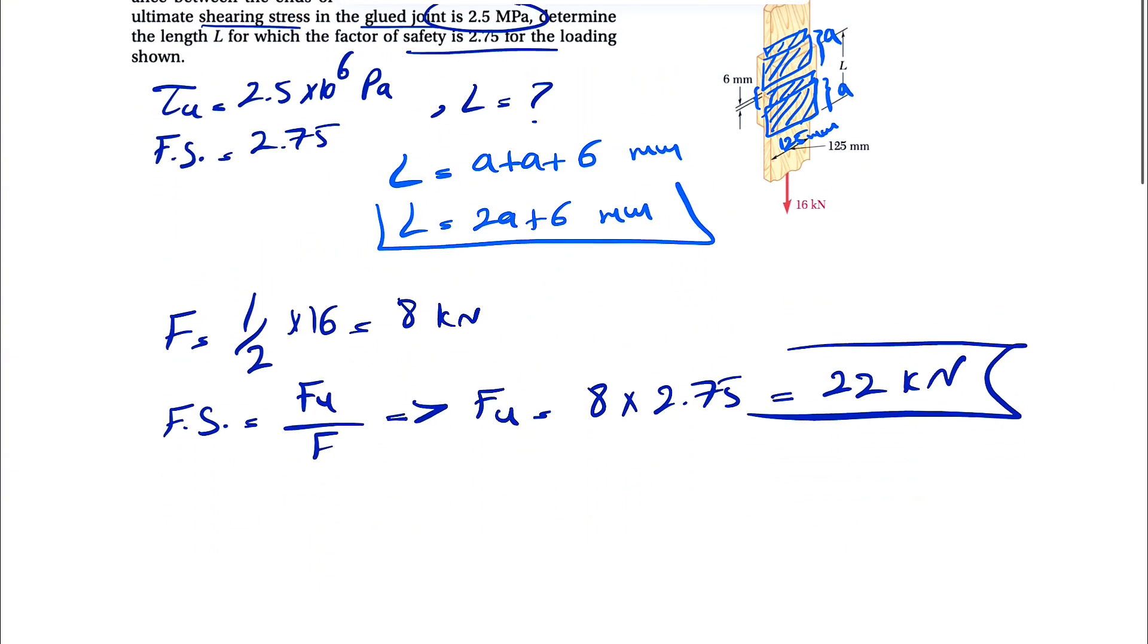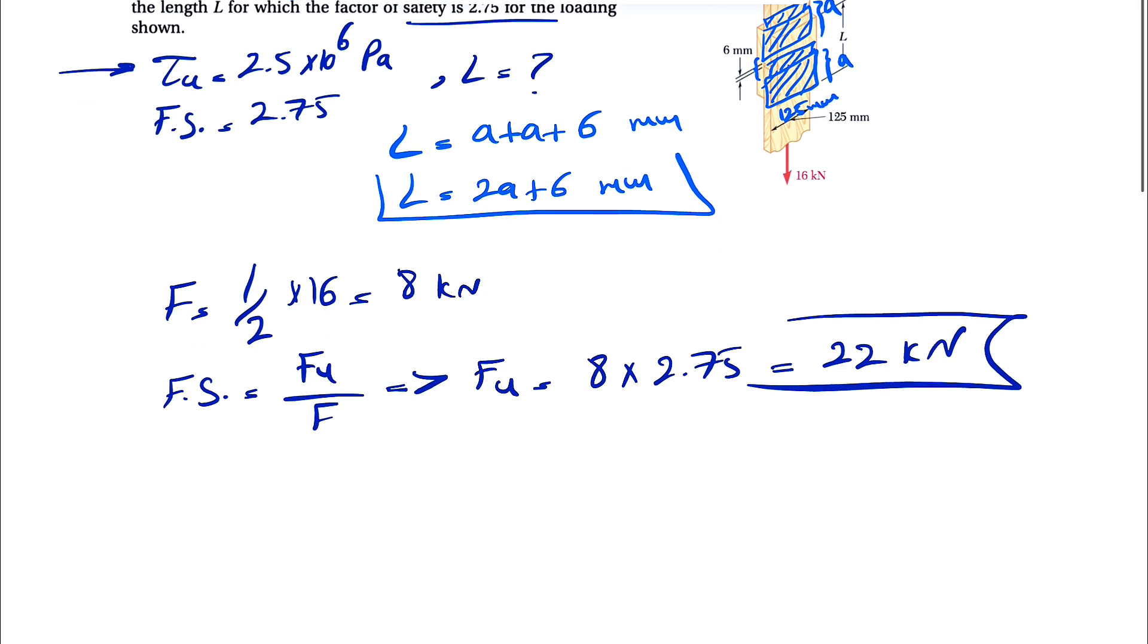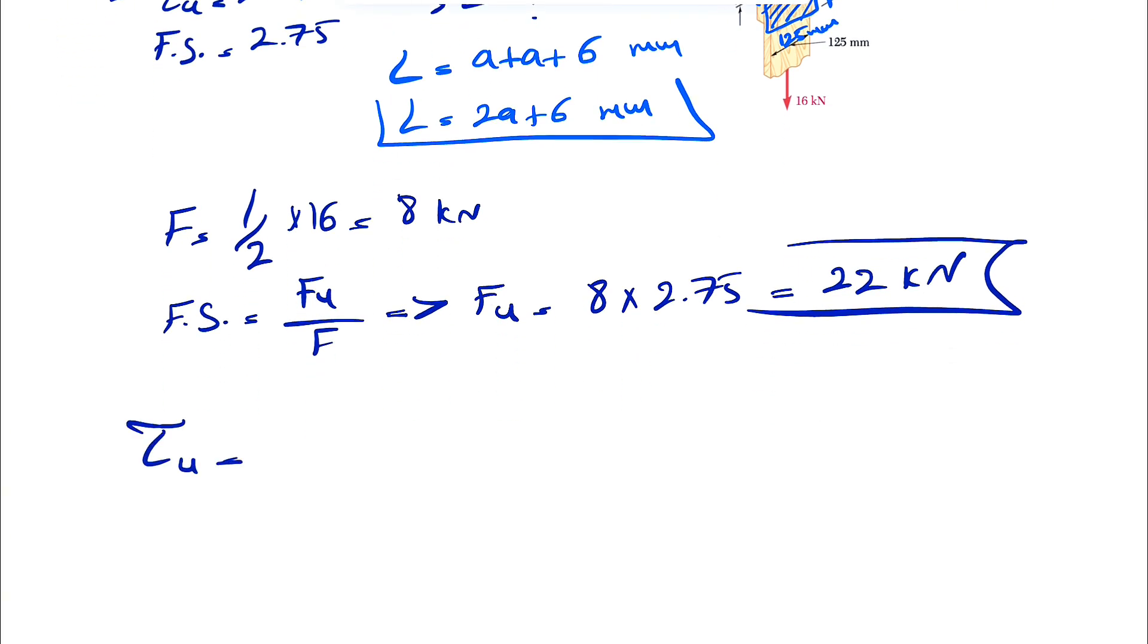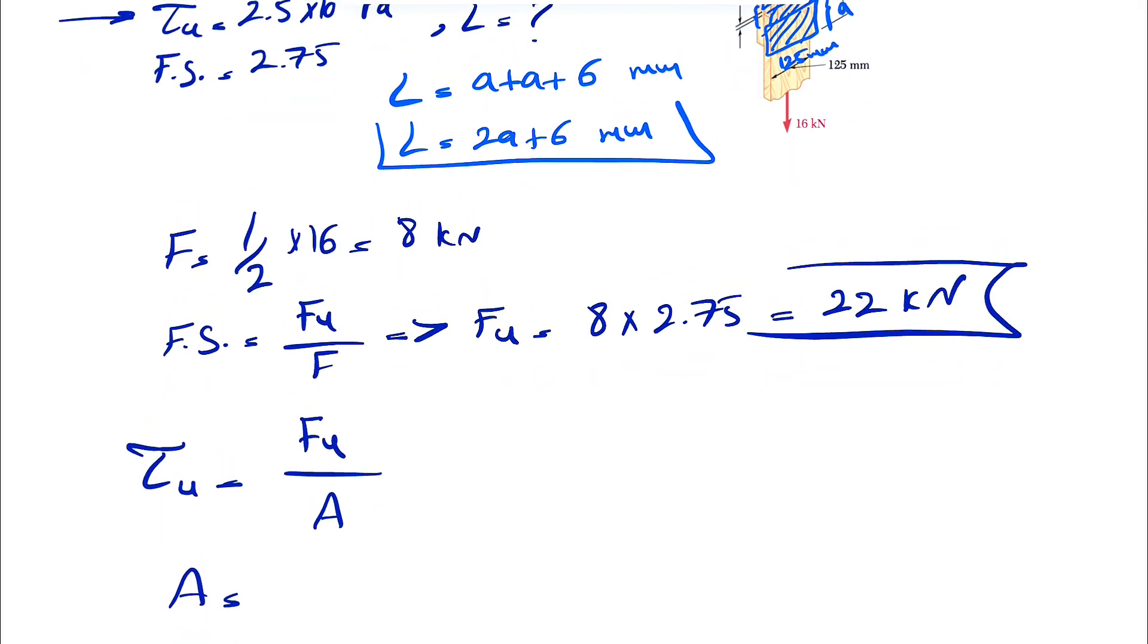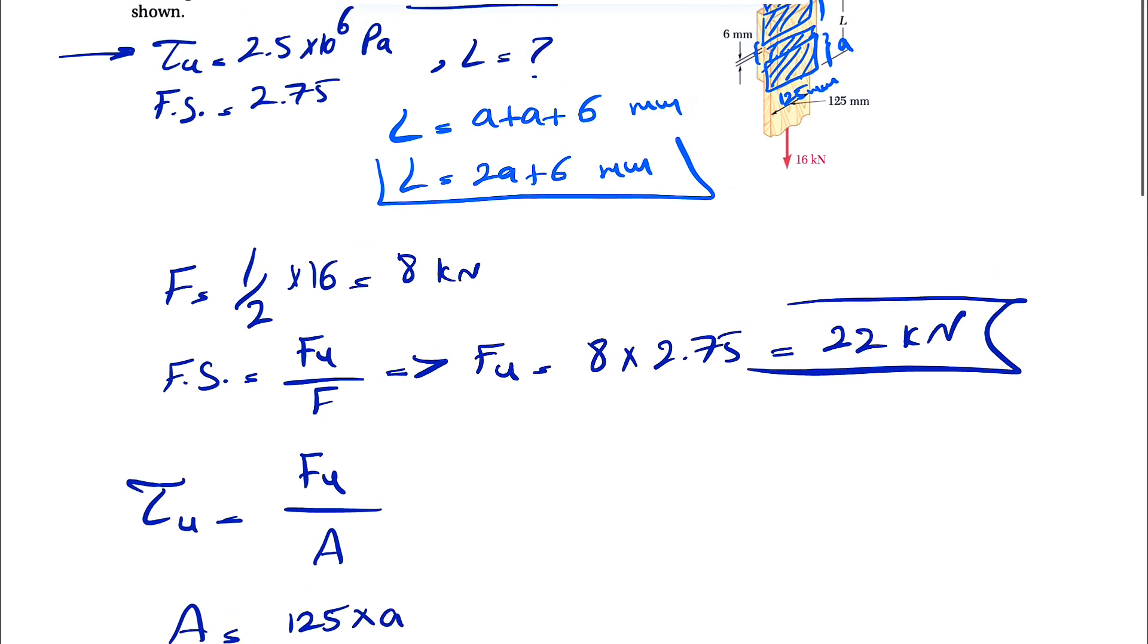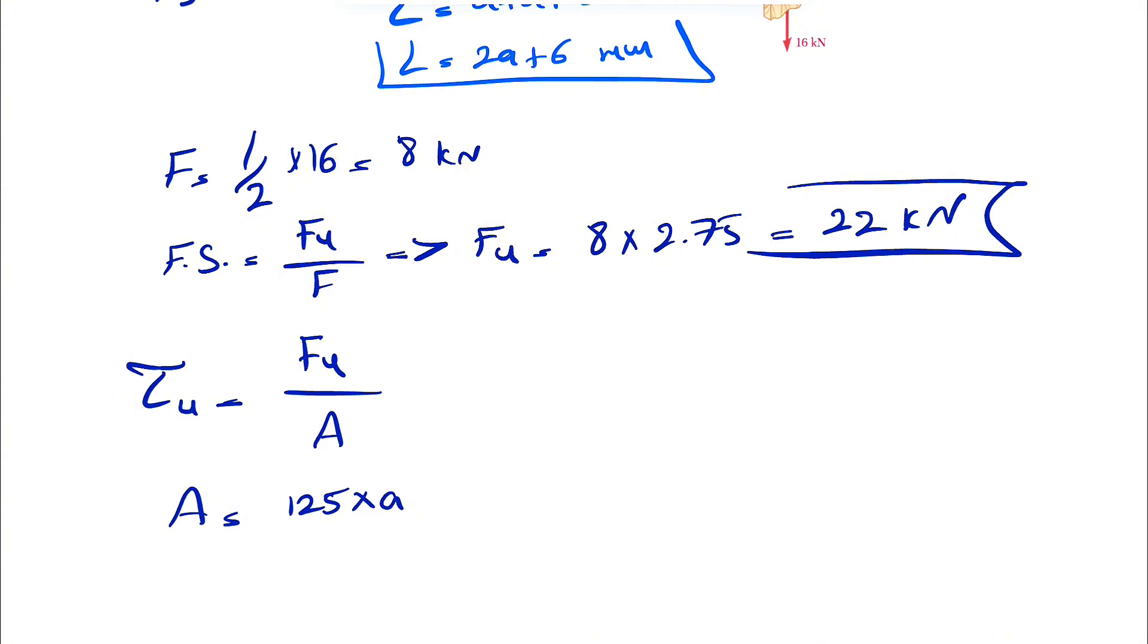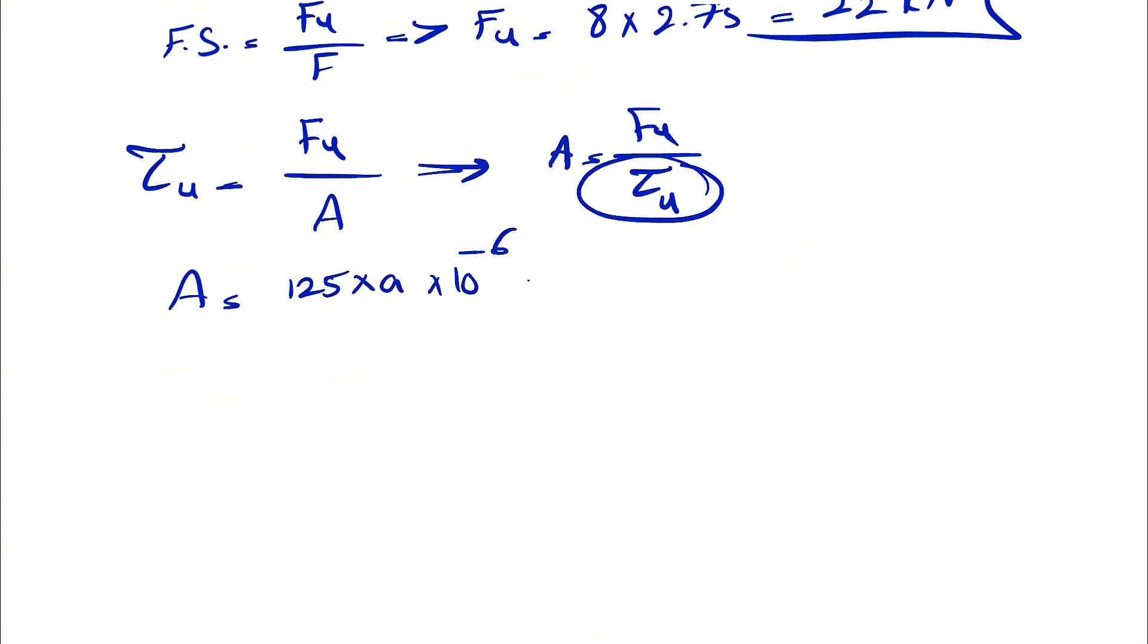Now that we have the ultimate force, we also have the ultimate shear stress. We know the ultimate shear is equal to the ultimate force, or the FU that we found, over the area. The area would be the area of the glued part, which is basically 125 times A, so it's the area of the rectangle. We have 125 times A times 10 to the minus 6, that's going to give us our area in meters squared.